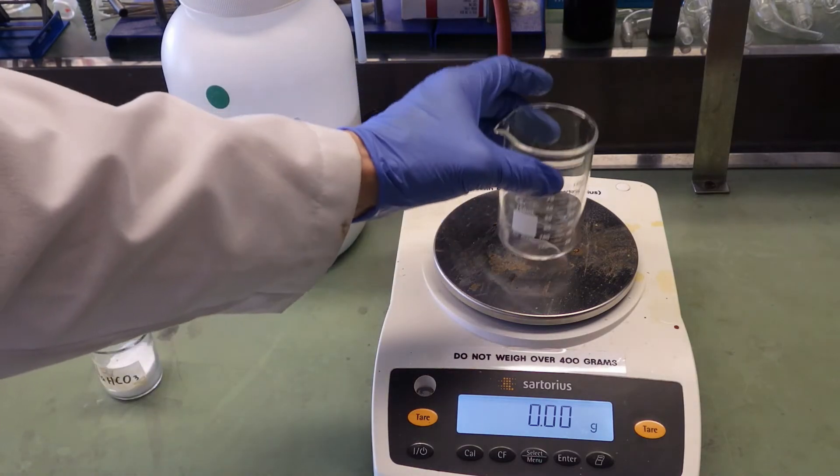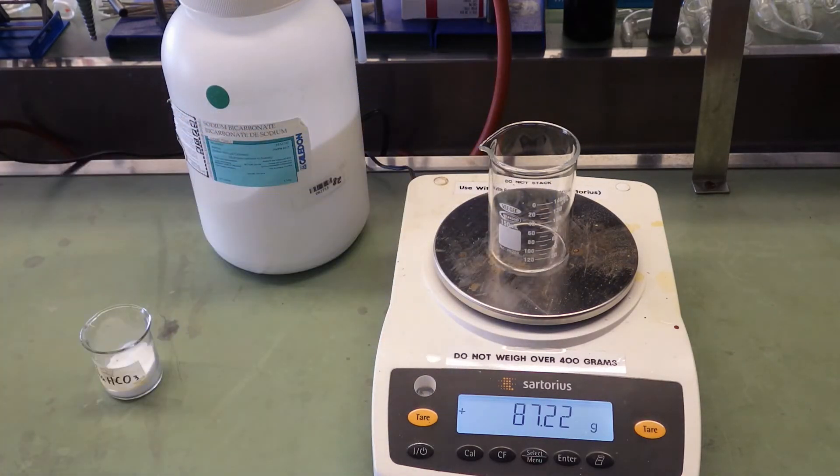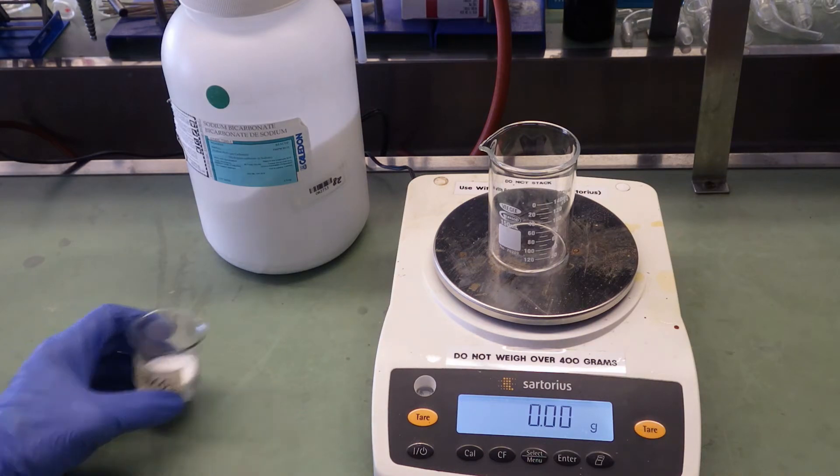So we'll need the mass of a clean, dry 100 ml beaker. 87.22 grams, you want to record that mass. So I tear, or zero the balance.